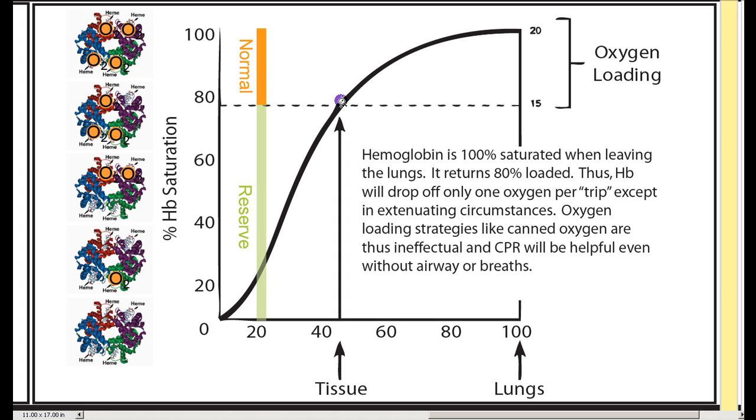One last example is you may have heard of canned oxygen or oxygen bars, and those are completely worthless because hemoglobin that's already leaving the lungs is already 100% filled. So putting more oxygen in your lungs, unless you've got some severe medical condition, is not going to help a hemoglobin load up with any more oxygen.